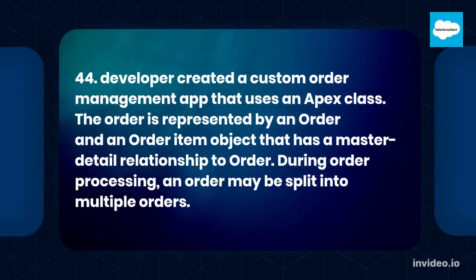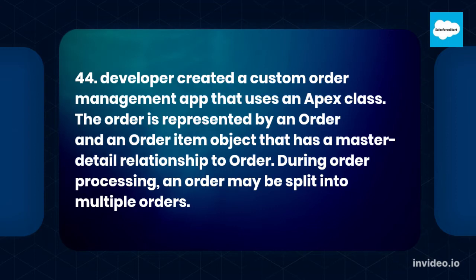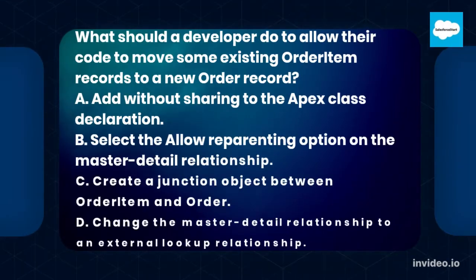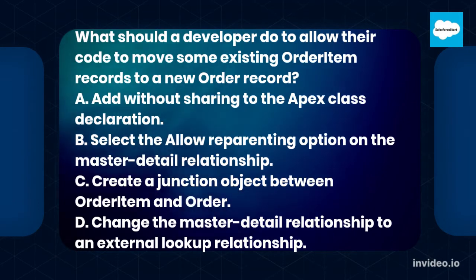Question 44: A developer created a custom order management app that uses an Apex class. The order is represented by an order and an order item object that has a master-detail relationship to order. During order processing, an order may be split into multiple orders. What should a developer do to allow their code to move some existing order item records to a new order record?